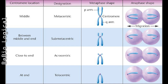Depending on the position of the centromere, chromosomes can be grouped as: metacentric, where the centromere is located exactly at the center of the chromosome — such chromosomes assume a V-shape at anaphase. Next is submetacentric, where the centromere is located on one side of the center point such that one arm is longer than the other.